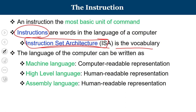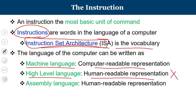The vocabulary is defined by instruction set architecture, which we will discuss in detail today. The language of a computer can be written in three ways: machine language, which only a computer can read; high-level language, which is human-readable but a computer cannot read; and assembly language, which is also human-readable. Translators are used to convert high-level or assembly language statements into equivalent machine language statements readable by a computer.